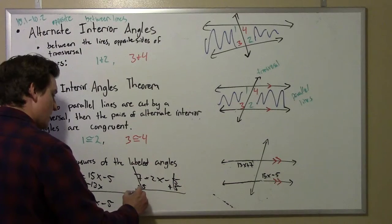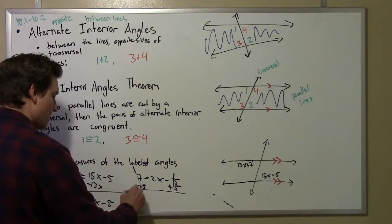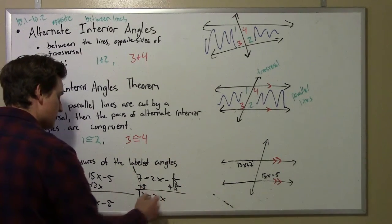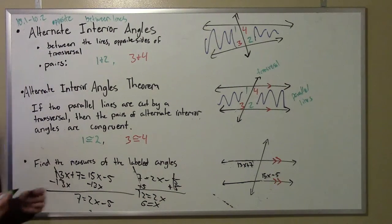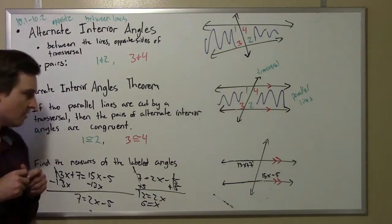This is 12. 12 equals 2x, and if you divide both sides by 2, you get 6 equals x. That's going to help us out.